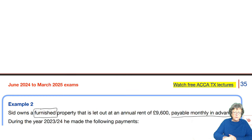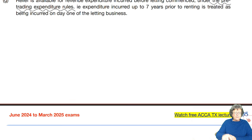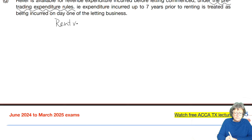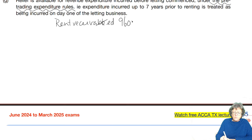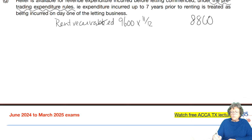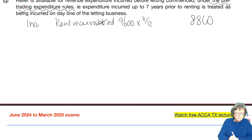Let's have a look at how that would look in the model answer. So, rent received — let's do it the proper way. Annual rent. There's a whole month where you didn't get any rent, so you just need to make sure that you deal with that. That was the income. Now expenses: so we've got the replacement furniture.